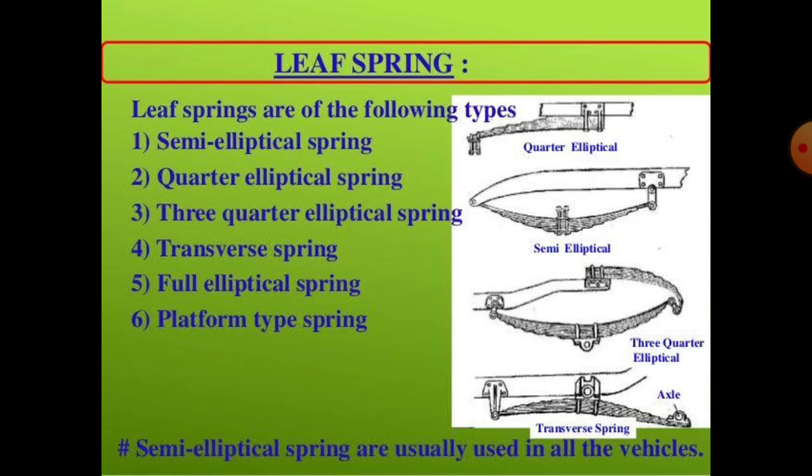There are a number of subtypes of leaf spring. The types are: semi-elliptical spring, quarter elliptical spring, three-quarter elliptical spring, transverse spring, full elliptical spring, and platform type spring. Mainly, semi-elliptical springs are usually used in all types of vehicles.